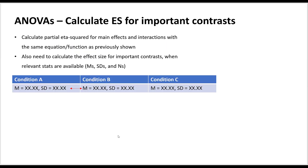In addition to partial eta squared for main effects or interactions, we also need to calculate effect sizes for important contrasts. Suppose we have a one-way ANOVA comparing three conditions A, B, and C, with an effect size calculated for the main effect. If we are particularly interested in the difference between condition A and condition B, we also need to calculate an effect size metric for that specific contrast within the grand ANOVA we conducted.